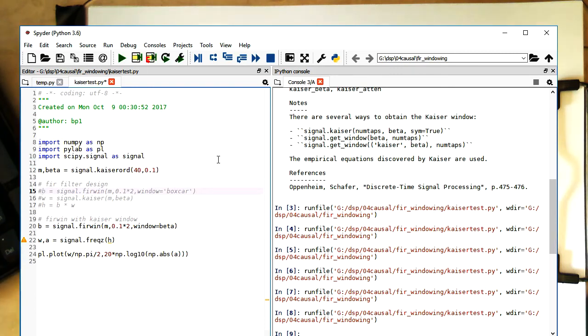Because the M comes here from the Kaiser order. And so this goes here in the firwin. And then here, the beta parameter comes also from Kaiser ord. So we can directly generate our H function.